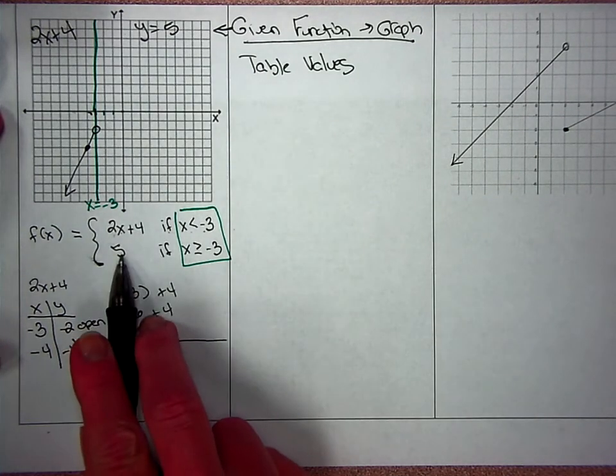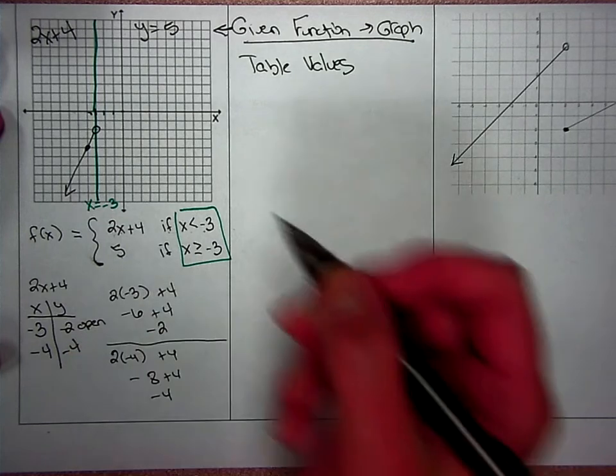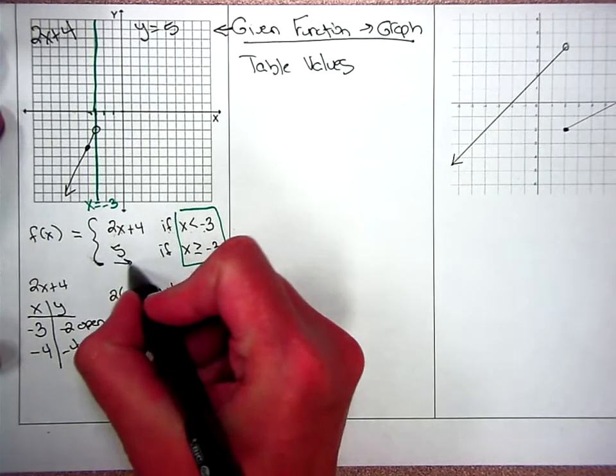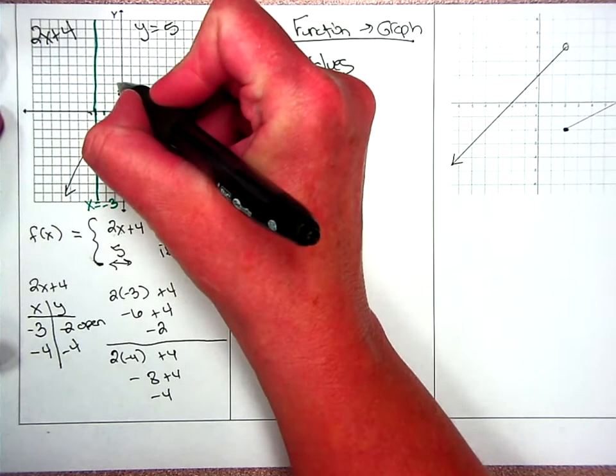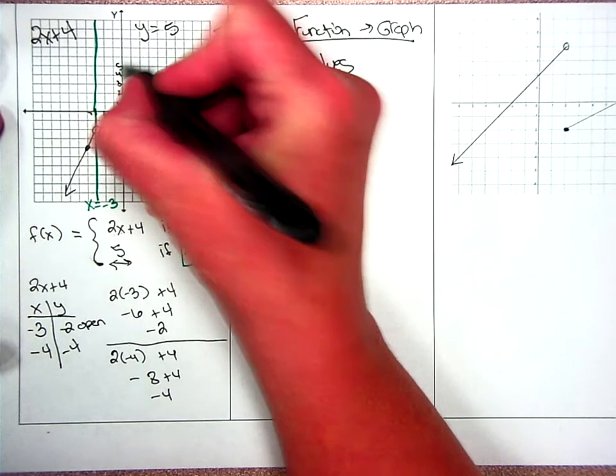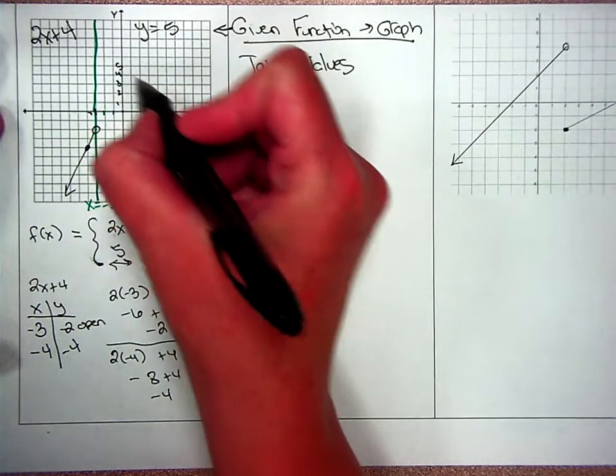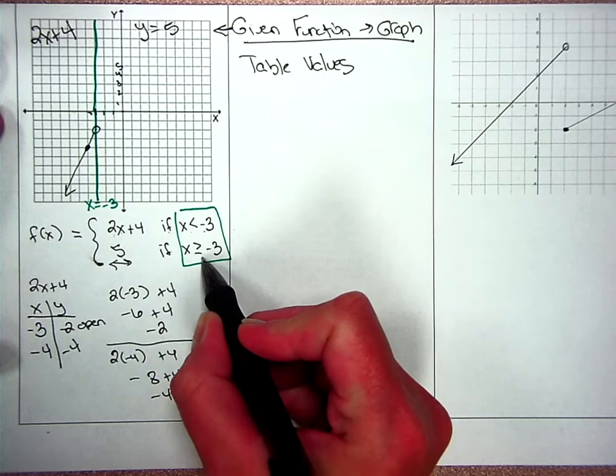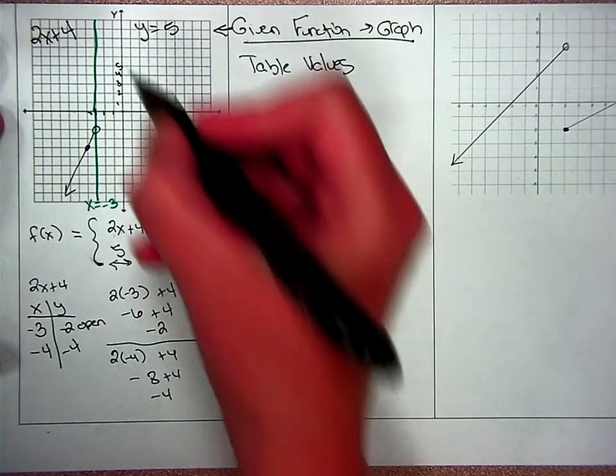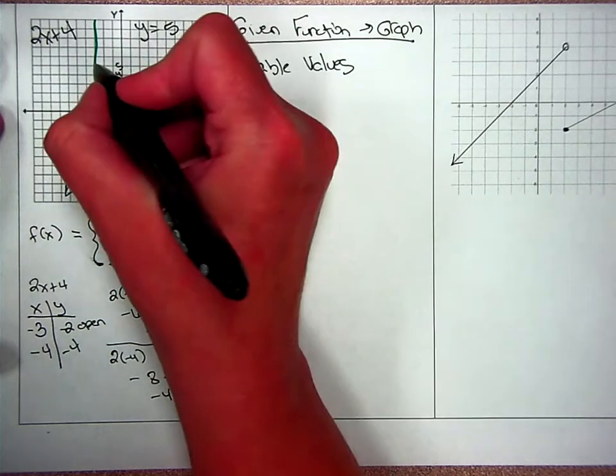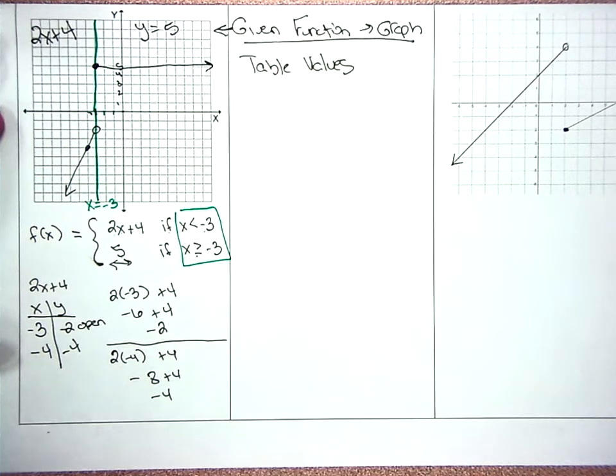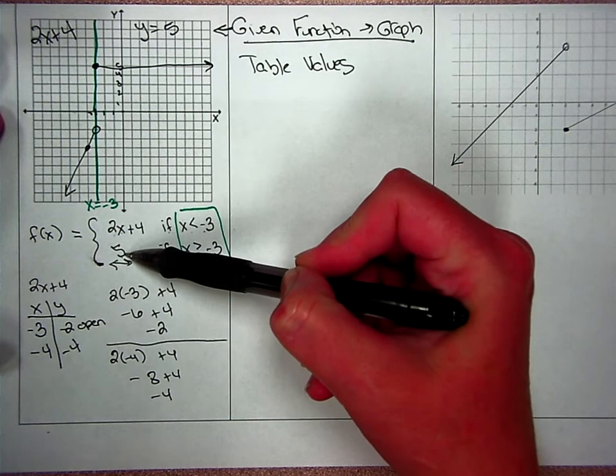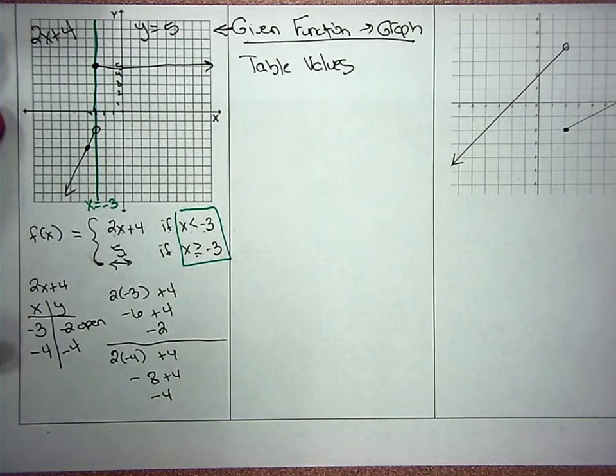This other one is the line y equals 5, and that is a horizontal line. One, two, three, four, five. So it crosses the y axis and it comes up to your boundary line. And there's a bar under it, so it equals it. So this is your line, your other function y equals 5.